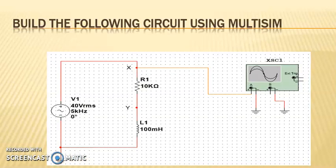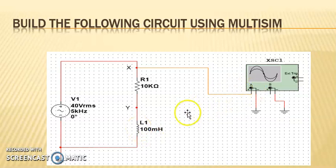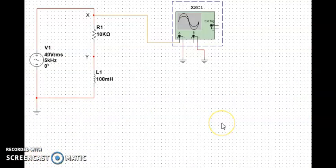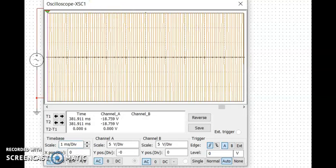First you need to build these circuits as a series circuit — a 10k resistor and a 100 mH inductor connected to channel A of the oscilloscope. Build the circuit, then let's open up the oscilloscope and press run.